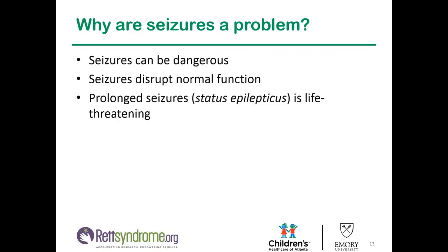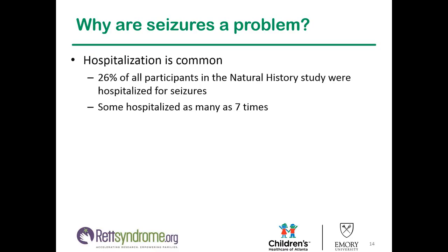Why are seizures a problem? Seizures can be deadly — status epilepticus is associated with a high risk of mortality. Seizures can disrupt normal function; if a child is seizing frequently, it's unlikely they're going to be able to learn anything. Prolonged seizure status epilepticus is life-threatening, and if it results in vomiting and aspiration, that is actually a common cause of death in Rett Syndrome. Hospitalization is common: in the natural history study, 26% of over 1,000 individuals were hospitalized for seizures, and some were hospitalized as many as seven times over the course of the study.